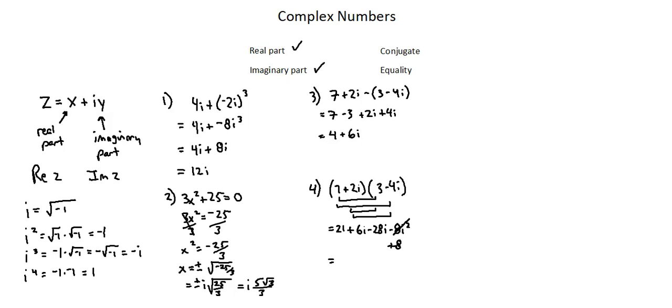And now we'll combine the real parts and the imaginary parts. 21 plus eight is 29. Six minus 28 is minus 22 i.